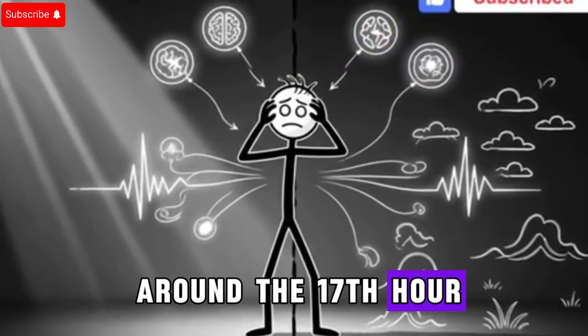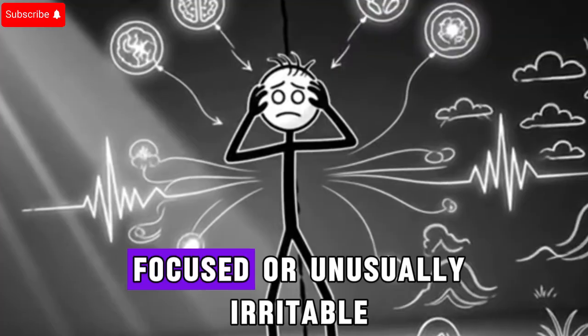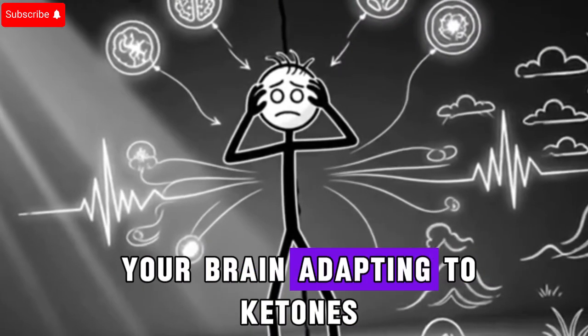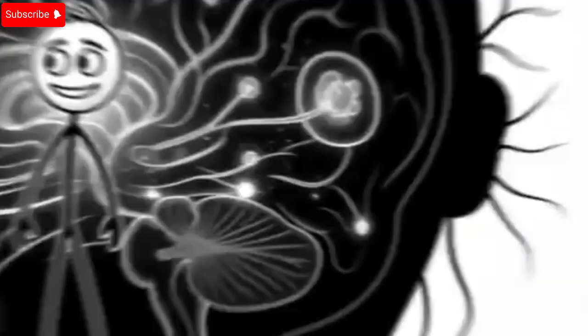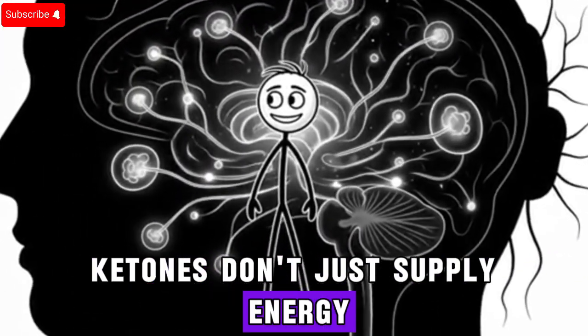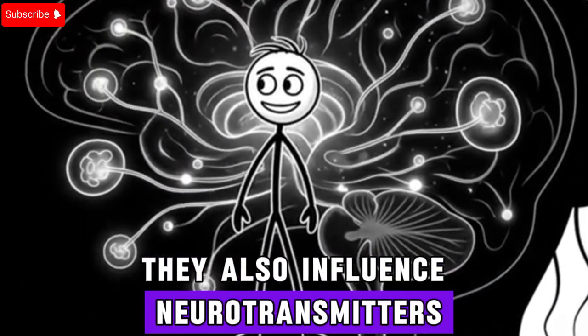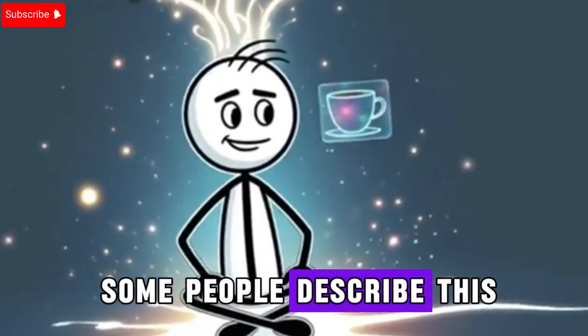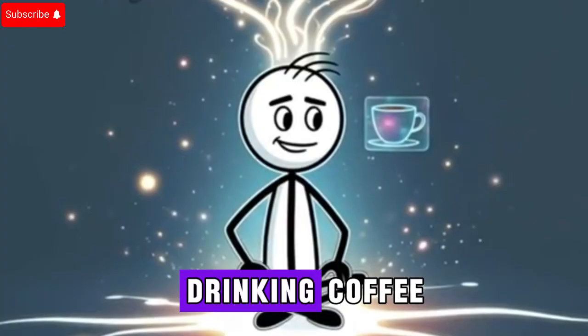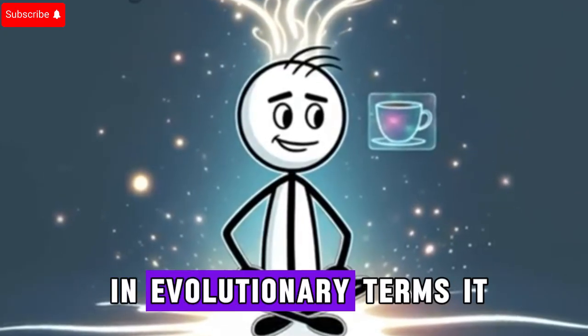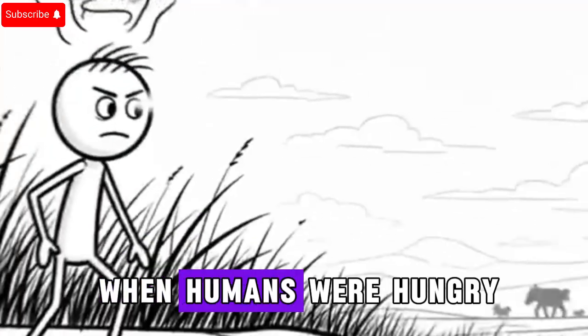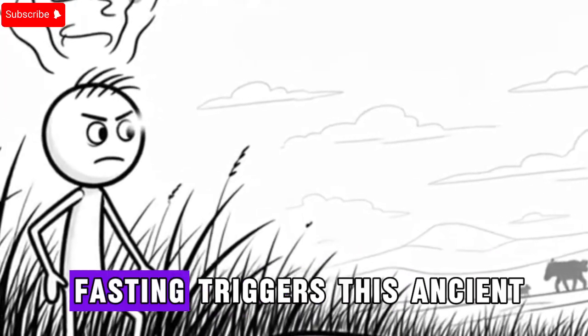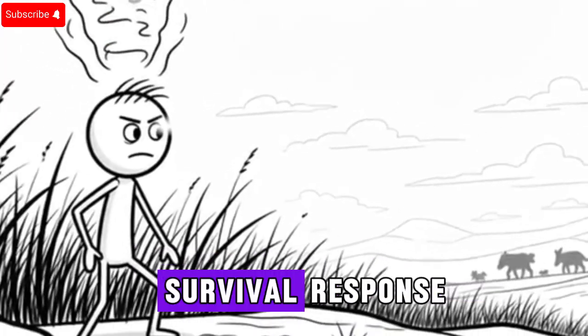Around the 17th hour, you may feel unusually focused or unusually irritable. This paradox comes from your brain adapting to ketones as an alternative fuel source. Ketones don't just supply energy, they also influence neurotransmitters, changing your mood and mental clarity. Some people describe this as a mental sharpness that feels almost like drinking coffee. In evolutionary terms, it makes sense. When humans were hungry, they needed heightened awareness to hunt or gather food effectively. Fasting triggers this ancient survival response.